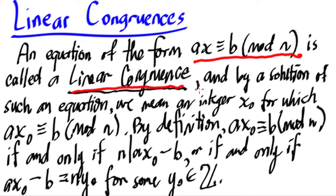And by a solution of such equation, we mean an integer x sub 0 for which a times x sub 0 is congruent to b mod n. So by definition...